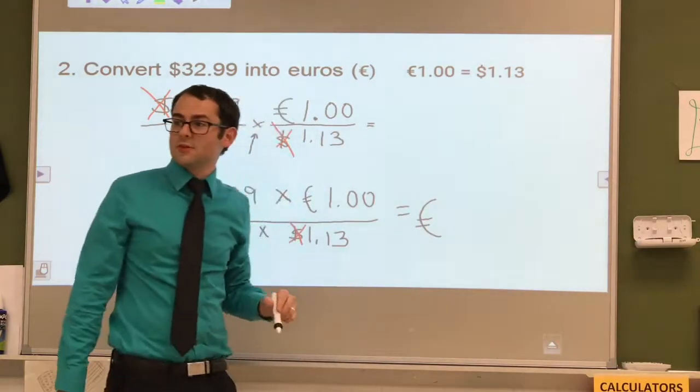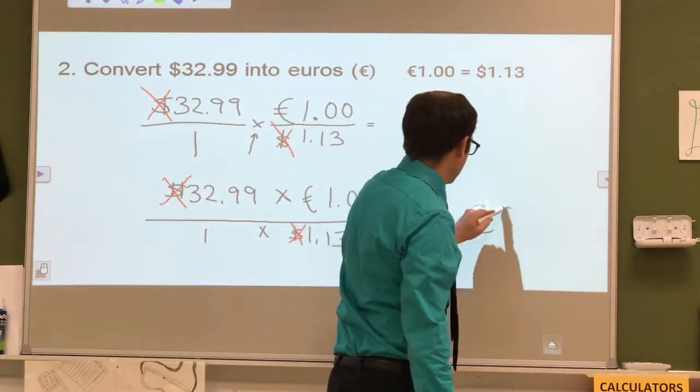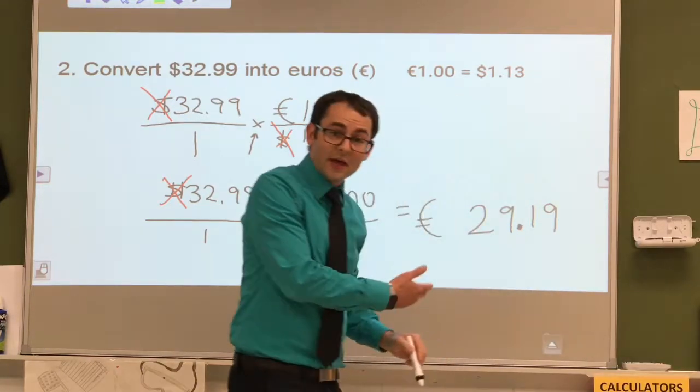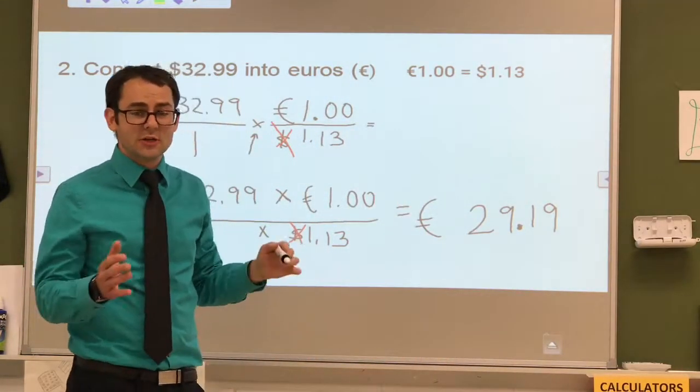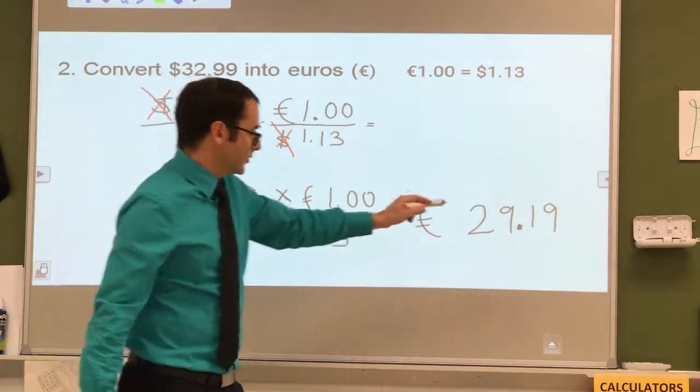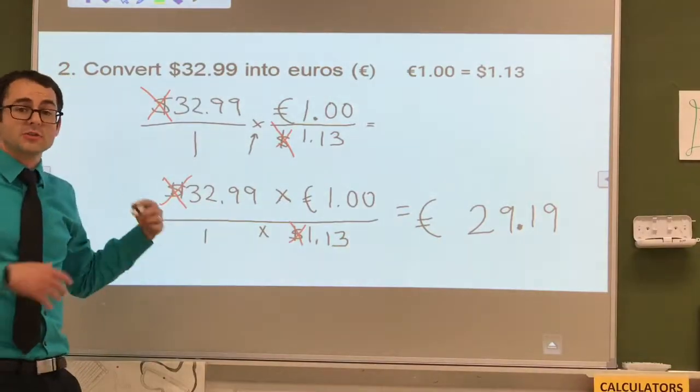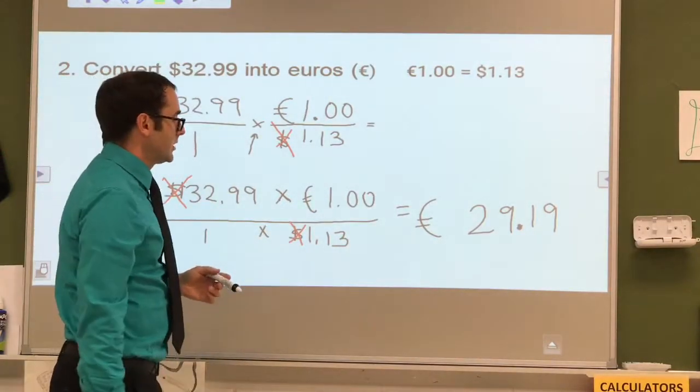When we do the math for this one, we get 29.19. And that's the right number of sig figs. Not just because it's two decimal places for cents. But because we started with four sig figs, so we would end with four sig figs here as well.